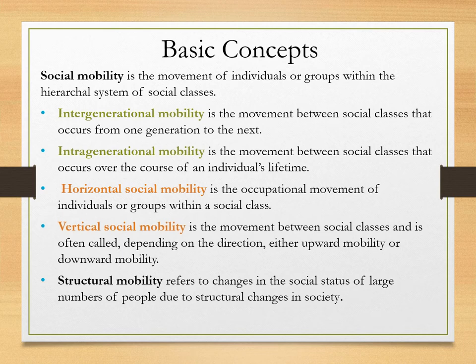Social mobility is the movement of individuals or groups within the hierarchical system of social classes. Intergenerational mobility is the movement between social classes that occurs from one generation to the next — your parents did something to improve or harm your financial situation, creating the situation you are in right now. Intragenerational mobility is the movement between social classes that occurs over the course of an individual's lifetime — you did something to create your position in the class system.